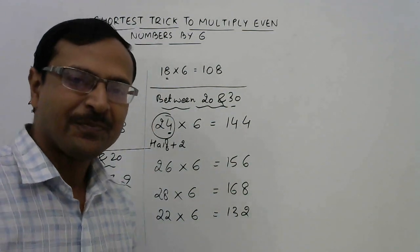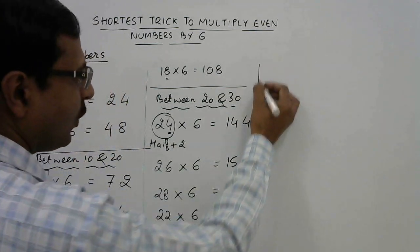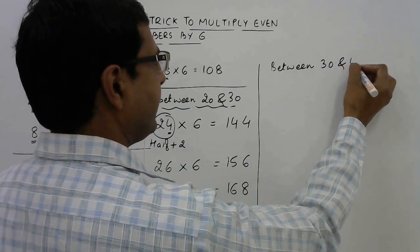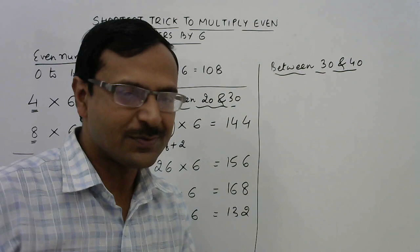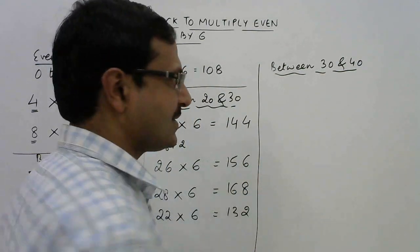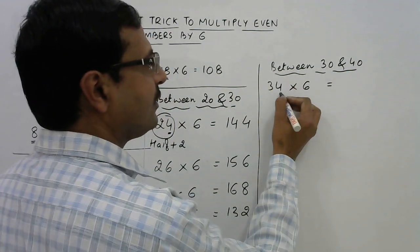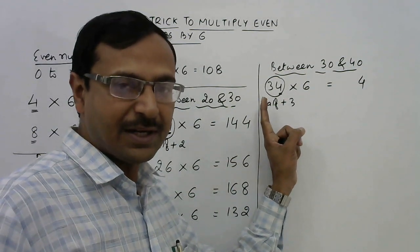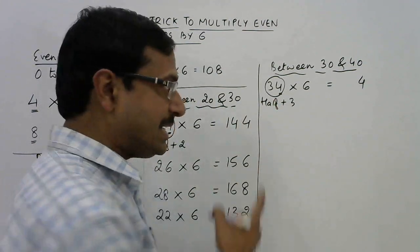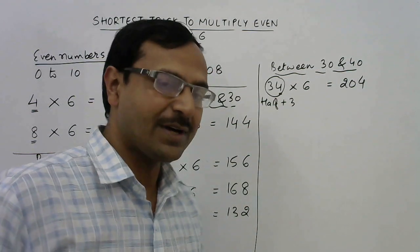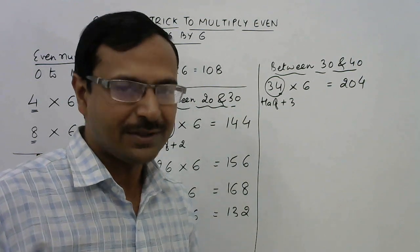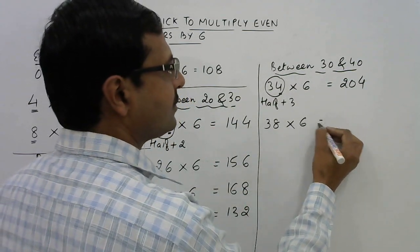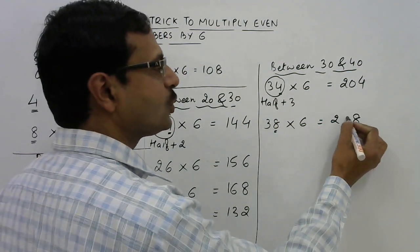Let's move on to numbers between 30 and 40. You now know the rule and can generalize easily. I will move up to 50 and then leave it to you. So 34 into 6: we have a 4 here. Half plus 3 because the number is between 30 and 40. Half of 34 is 17, plus 3 is 20. So 204 is the product. Let's see 38: 8, half of 38 is 19, plus 3 is 22. So 228.